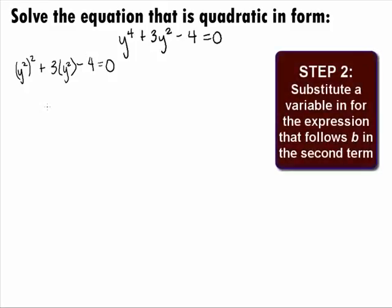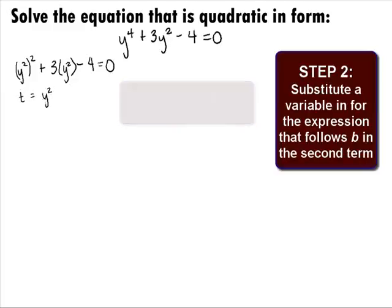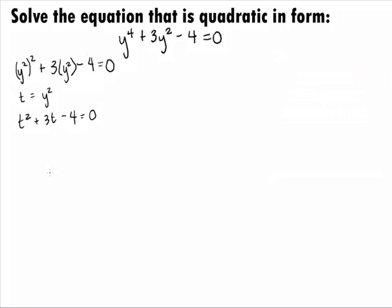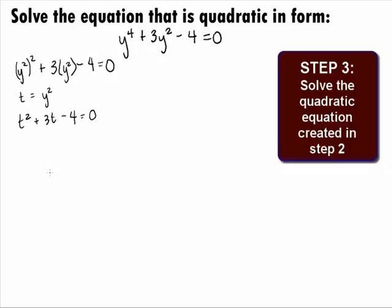In Step 2, we want to substitute a variable in for the expression or base that follows b in the second term. Let's go ahead and use the variable t for this. Since we have this written in standard form, then t equals y squared. We need to substitute t in for y squared in the original equation. We have a base of y squared being squared, so when we substitute t for y squared, we are going to get t squared plus 3t minus 4 equals 0. Because we started out with an equation that was quadratic in form, we now have a quadratic equation to solve.